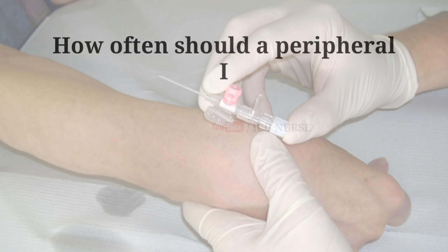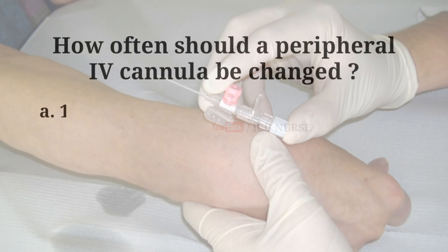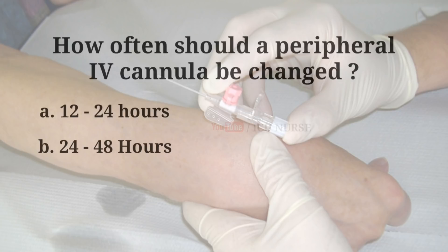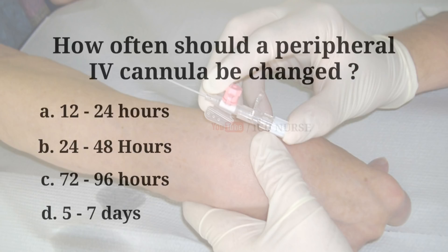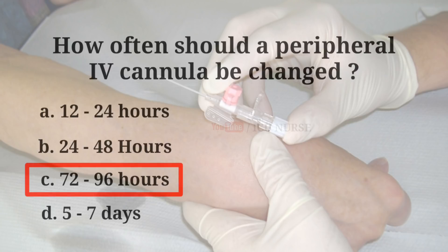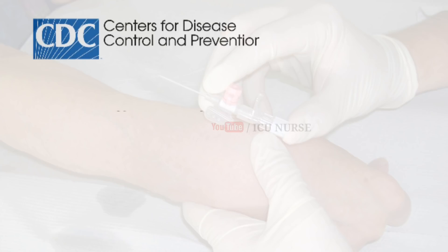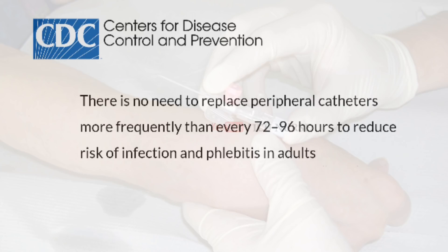How often should a peripheral IV cannula be changed? A. Between 12 to 24 hours. B. Between 24 to 48 hours. C. Between 72 to 96 hours. D. Between 5 to 7 days. The correct answer is C, 72 to 96 hours. According to CDC (Centers for Disease Control and Prevention), there is no need to replace peripheral catheters more frequently than every 72 to 96 hours to reduce risk of infection and phlebitis in adults.